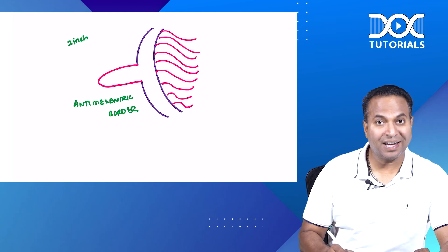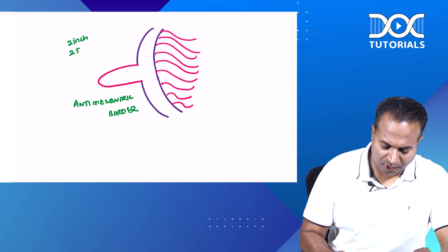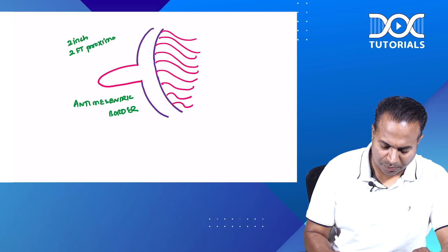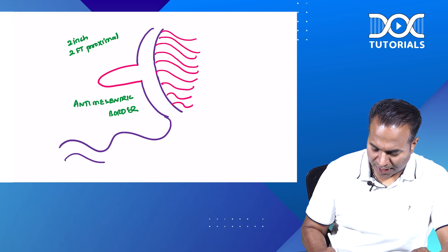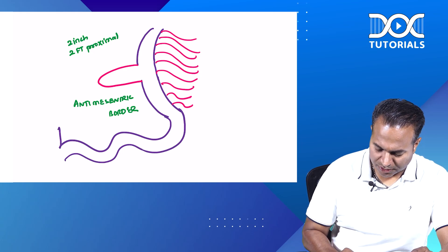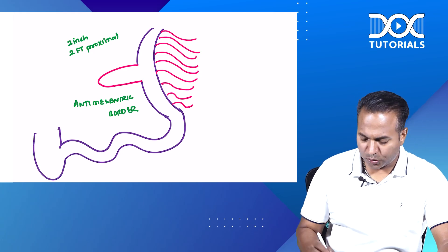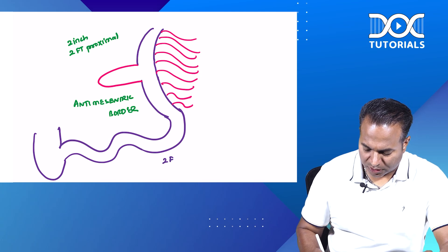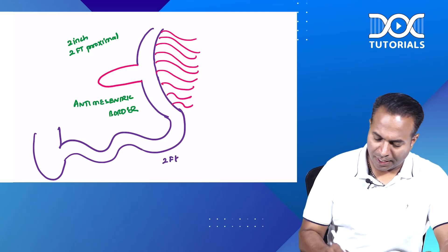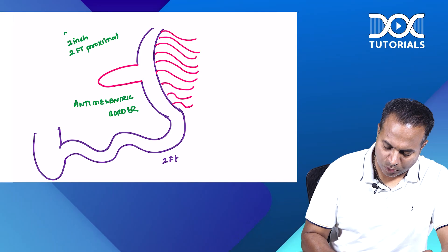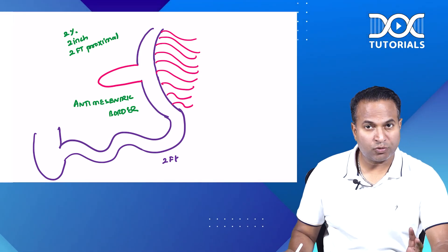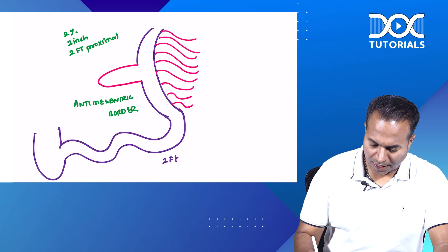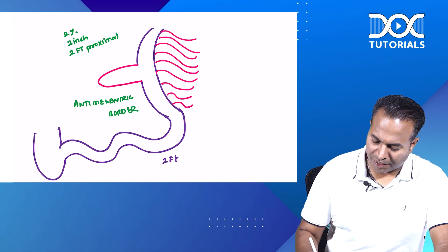Meckel's diverticulum is two inches in length. It is found two feet proximal to the ileocecal junction — the ileum continues and this is the ileocecal junction — so it is two feet proximal to it. And it is seen in two percent of individuals. That is what we call the Rule of Two.